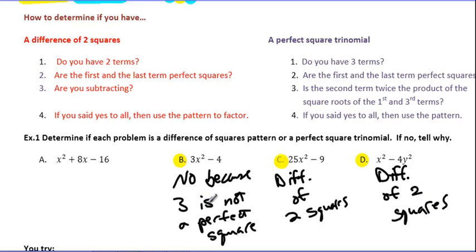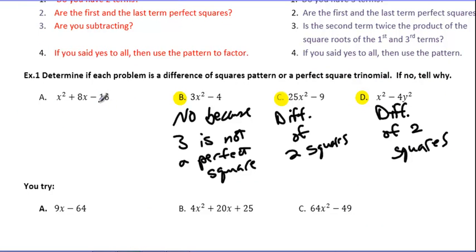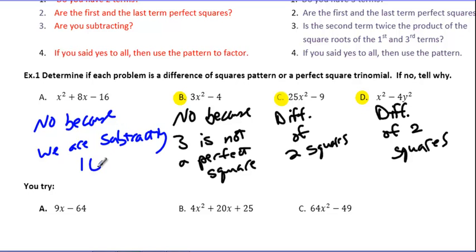Now let's look at A, the only one we skipped. Difference of Squares has to have two terms, but this has three terms, so we think maybe it's a Perfect Square Trinomial. Are the first and last terms Perfect Squares? Yes, but the sign in front matters here. For Perfect Square Trinomials, we want a positive last term. We would say this is not a Perfect Square Trinomial because it's negative 16 — no, because we are subtracting 16. So we didn't see an example of a Perfect Square Trinomial yet; we will as we move on.